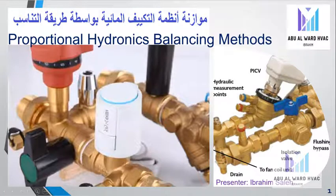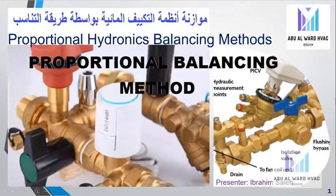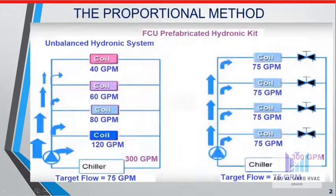Hello and welcome again. In this video we are going to talk about proportional hydronic balancing method, so let's begin. The proportional method, as we see here in this photo, we have an unbalanced hydronic system. The chiller has 300 GPM.